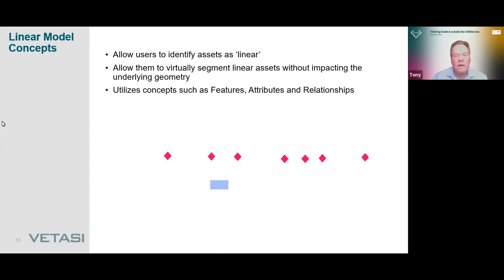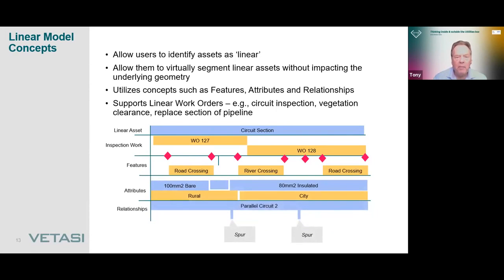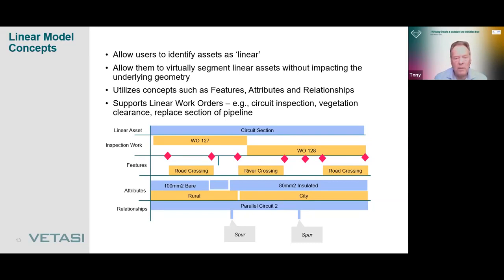So what are the concepts? We allow users to identify assets as being linear, and doing that we can virtually segment the linear assets without affecting the underlying geometry. One asset may change — going from a rural area to a city area, or from 100mm² bare cable to 180mm² insulated cable. Every time the asset attribute changes, we have linear attributes that can change without affecting the asset. We can then use concepts such as features — identifying points used for referencing linear attributes and relationships between assets. This approach also supports linear work orders such as circuit inspections or vegetation clearance.